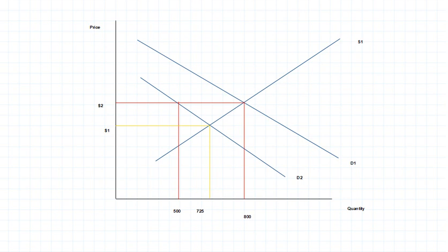There we have it. Our old equilibrium here, $2 and 800 units. Our new equilibrium here, $1 and 725 units.